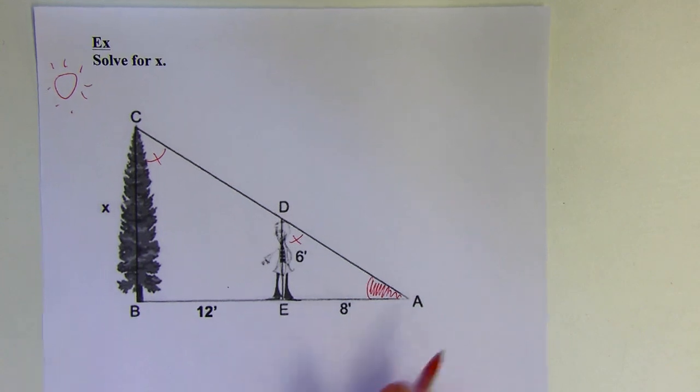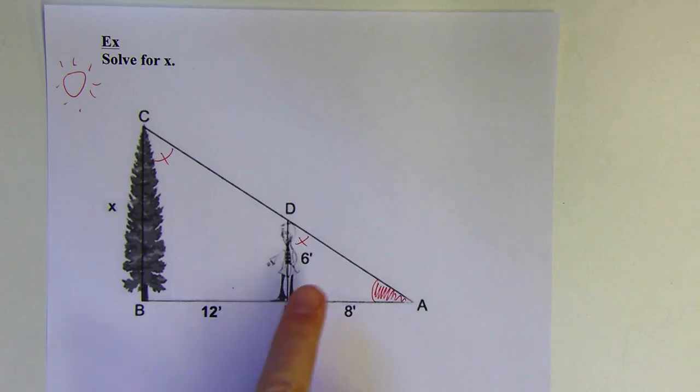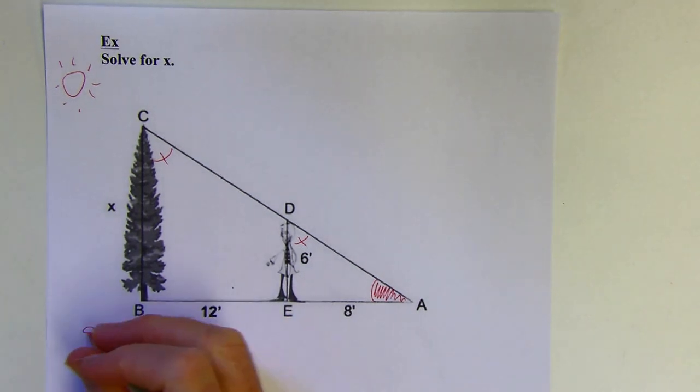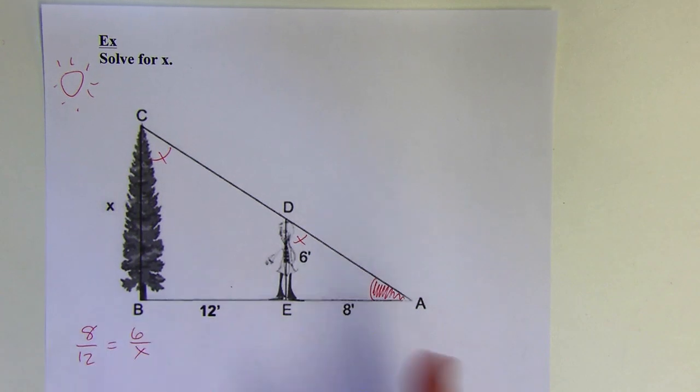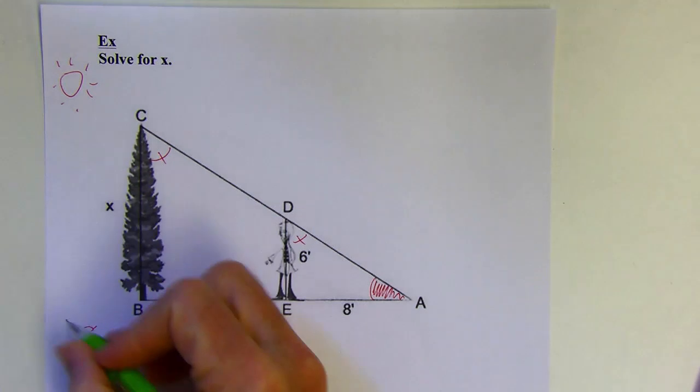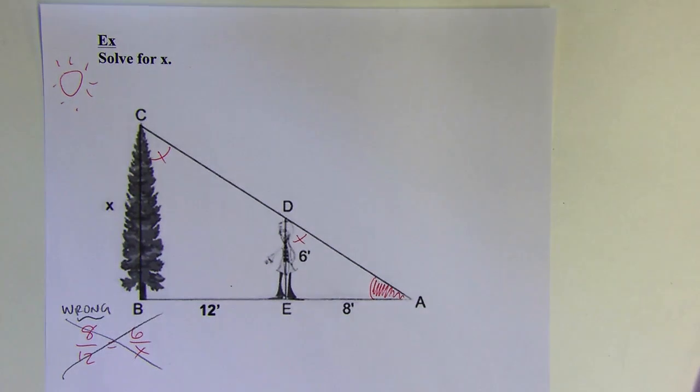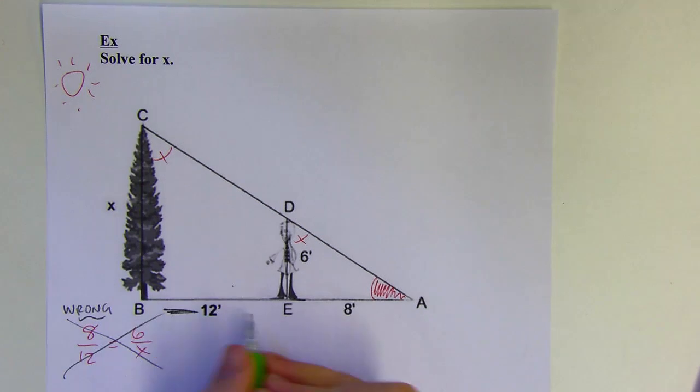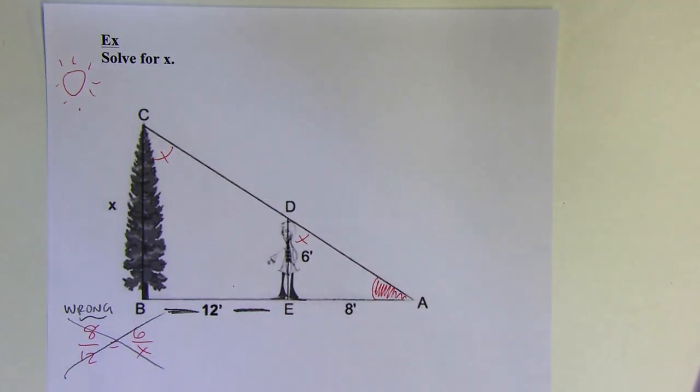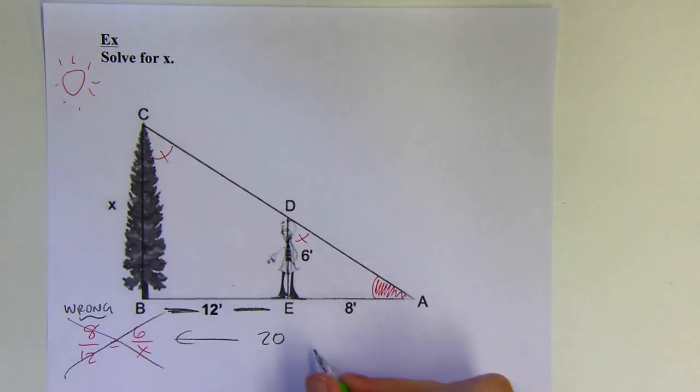Now here is the common mistake that I see made on this. People will say okay well then 8 is to 12 as 6 is to x. They'll set that up and cross multiply and solve it, but this is wrong. So don't do this. The mistake that got made is that 12 is not the bottom of the larger triangle. The bottom of the larger triangle is actually going to be 20, so it's really easy to make that mistake. Be careful with that.